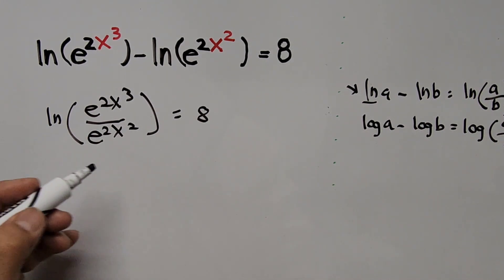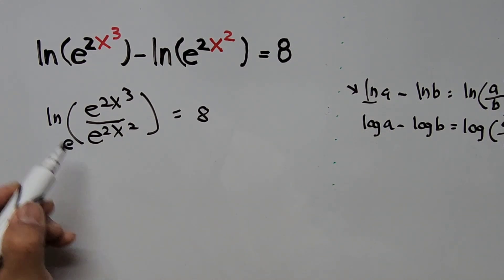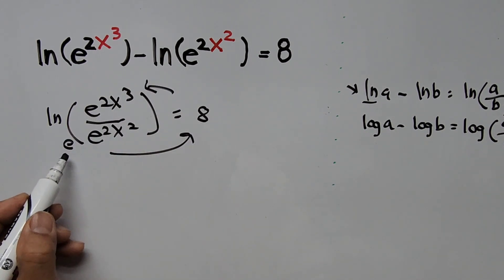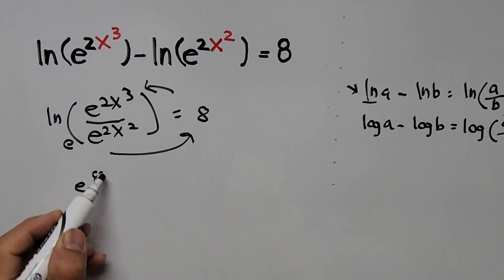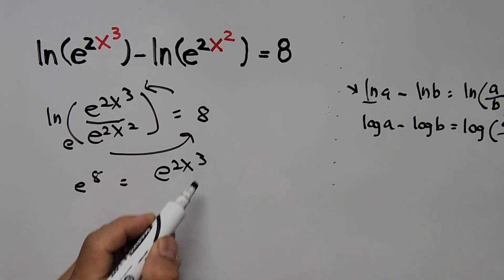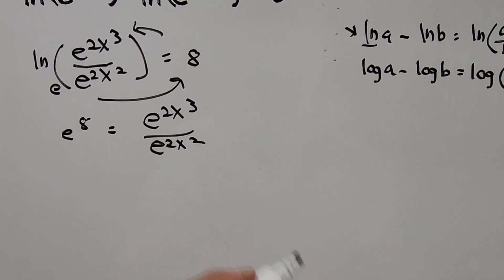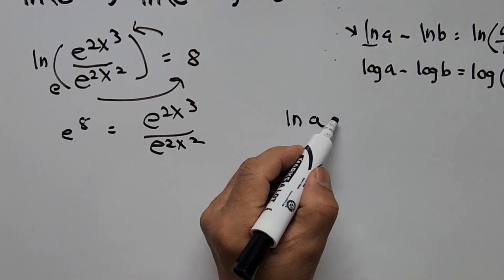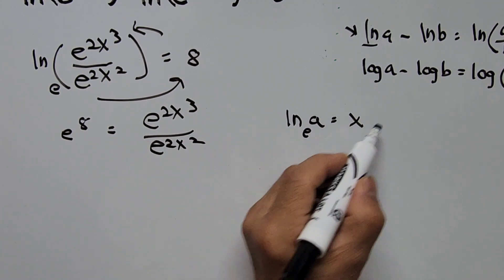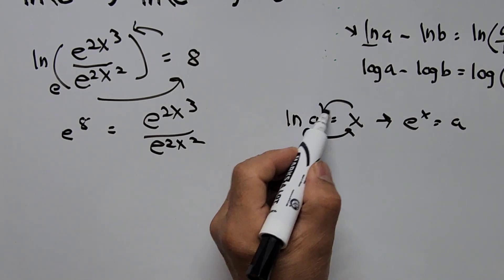The next step is converting this equation into exponential form. Since natural logarithm is a logarithm of base e, we use e as the base. Converting to exponential form — follow the arrow — so this is now e to the power of 8 equals e to the power of 2x cubed divided by e to the power of 2x squared. This comes from the basic formula: natural logarithm of a equals x, base e, so e to the x equals a.